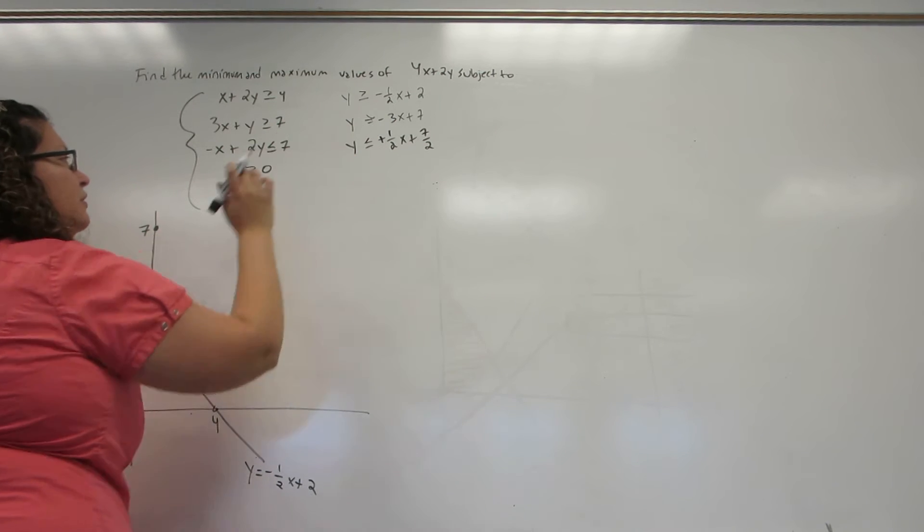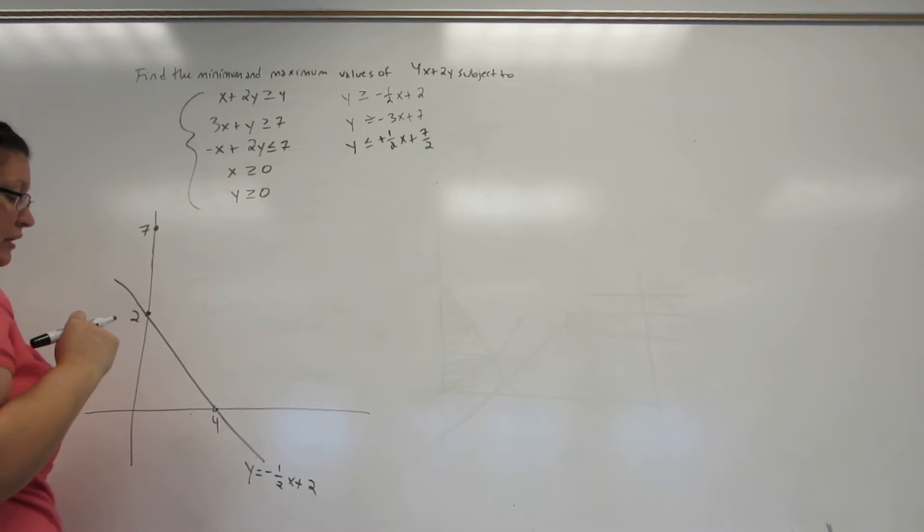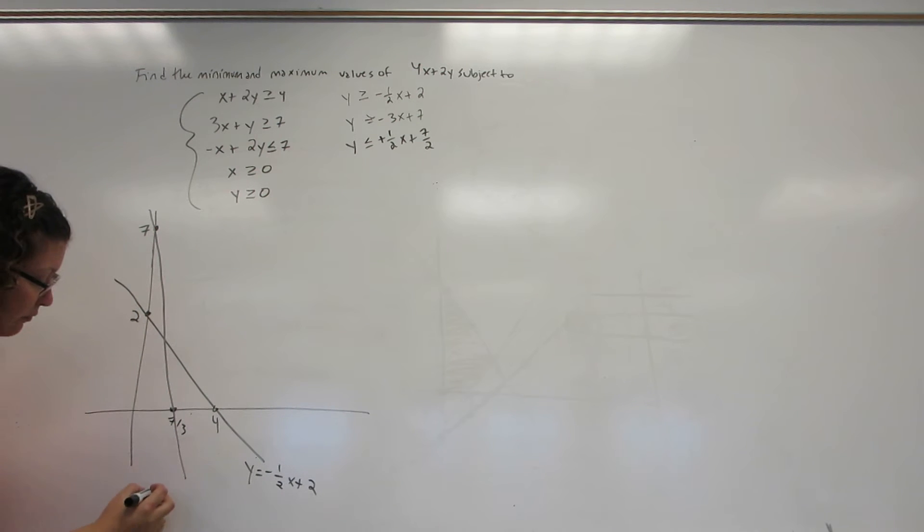Well, solving for the X-intercept of this second graph gives me a positive 7 thirds, which is less than 4. So this is a fairly steep graph.